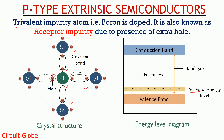The acceptor energy level in the energy level diagram shows the presence of the extra hole in the structure. When external heat is provided, the electrons present in the valence band move to the acceptor energy level, thereby decreasing the resistance and increasing the conductivity of the material. These are also known as acceptor impurity as they consist of an extra hole in their structure. In P-type semiconductors, holes act as majority charge carriers and electrons as minority charge carriers.